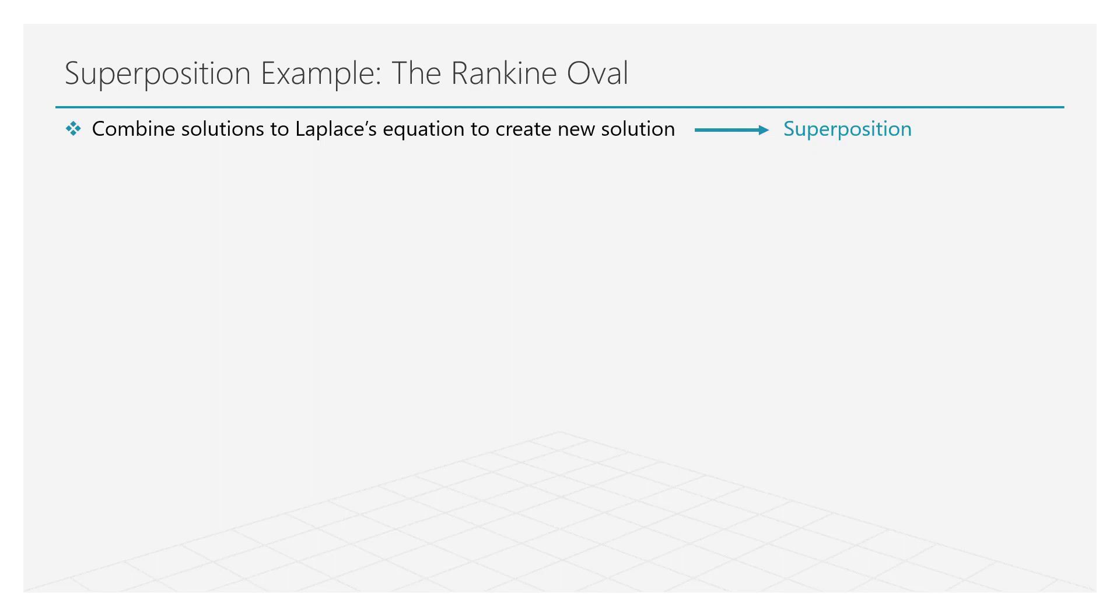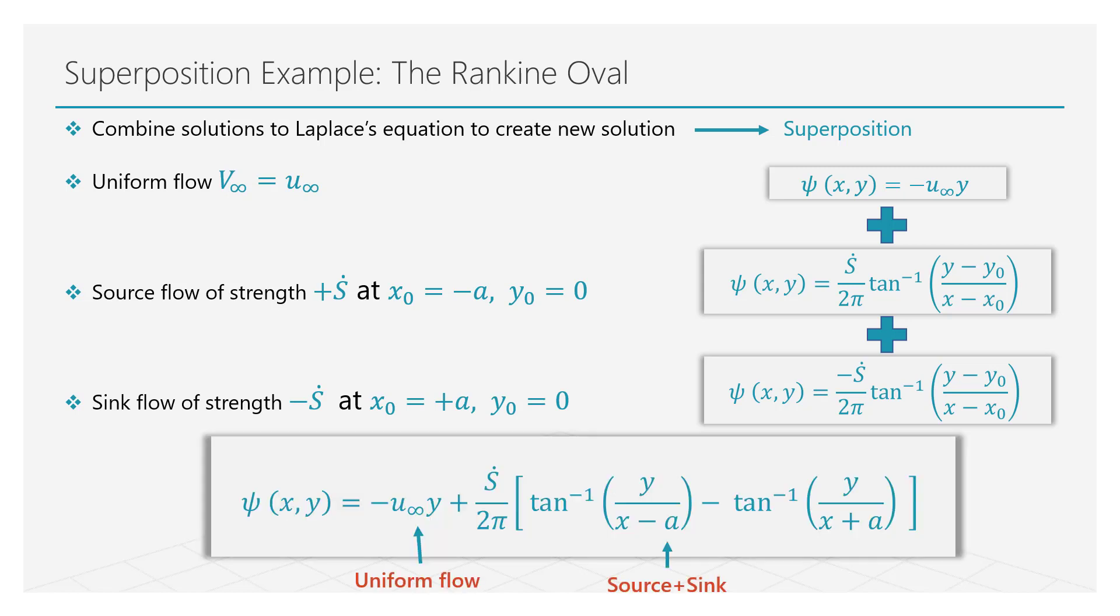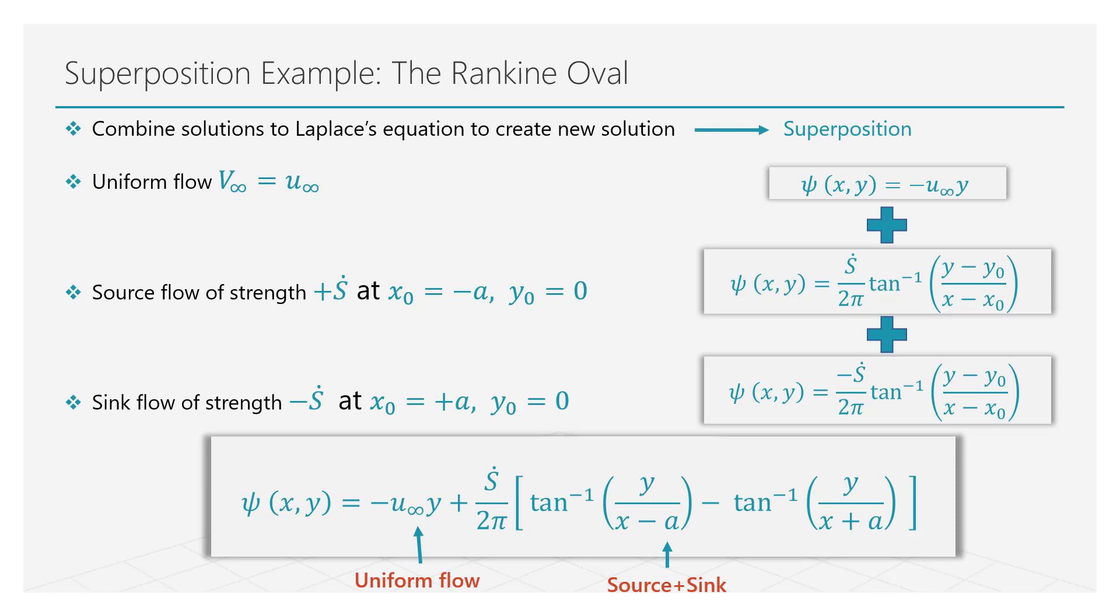Let us now create a new stream function, which is the sum of the stream functions of the uniform source and the sink flows. For the uniform flow, we are enforcing that the flow is strictly horizontal, that is, there is no V component of velocity. If we now plot the sketch for this new stream function, we can notice two distinct zones. The source and the sink appear to create an elliptical envelope and the uniform flow appears to be deflected around the envelope.